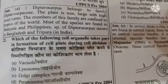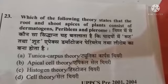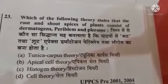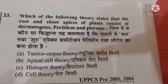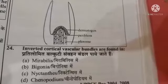Next question: which of the following theories states that the root and shoot apices of plants consist of dermatogen, periblem and plerome? Option A tunica-corpus theory, option B apical cell theory, option C histogen theory, option D cell theory. The right answer is option C, histogen theory.